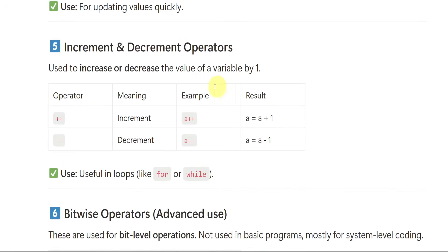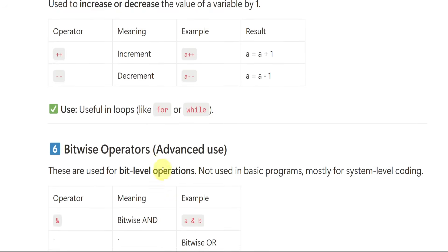Now increment and decrement — increment means two plus signs (++). Two minus signs (--) means decrement. When you have ++, it is increment: A++ means A equals A plus 1. Decrement: A-- means A equals A minus 1. These are useful in loops like for or while.